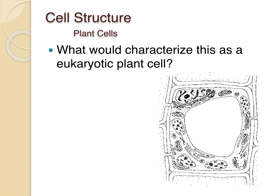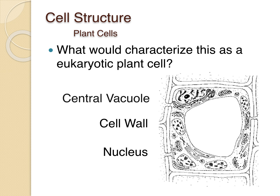This is another depiction of a plant cell — these drawings can look very different from one another. The nucleus makes it a eukaryote. The cell wall and the large central vacuole make it a plant cell. The big blank space in the middle is the central vacuole, the cell wall surrounds the outside, and the nucleus is in the top left corner — it looks kind of like an eyeball staring out at you.